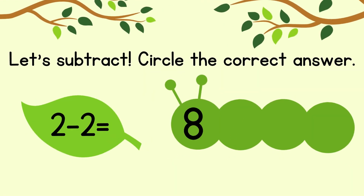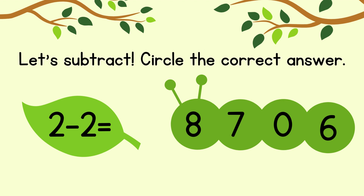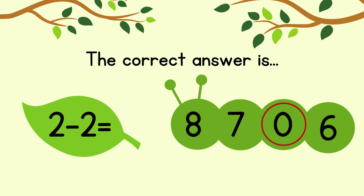Circle the correct answer. 2 minus 2 equals. The correct answer is 0.